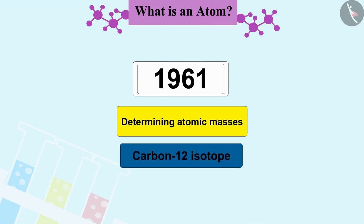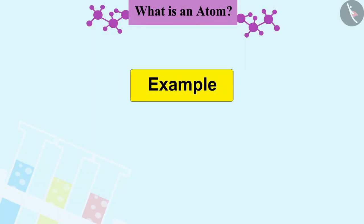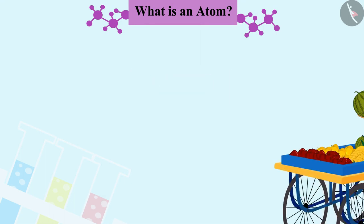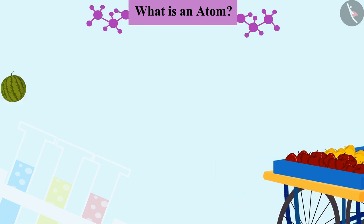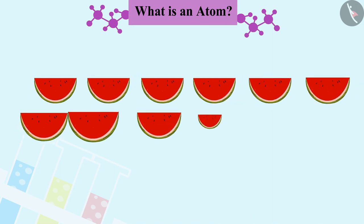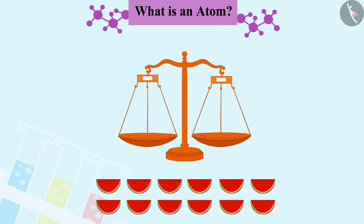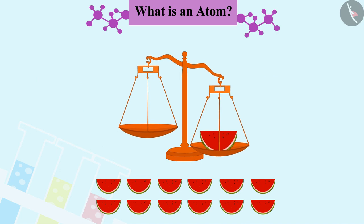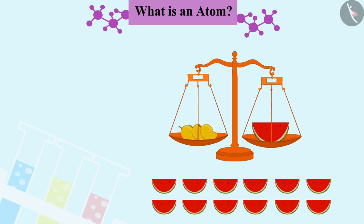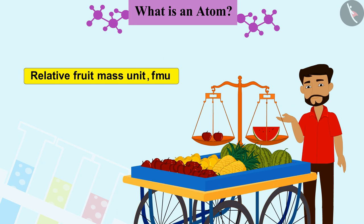Let us understand this by a daily life example. Imagine a salesman carrying a watermelon and saying its mass is 12 units. He then slices 12 equal pieces of watermelons and finds that the mass of each fruit it sells is relative to a piece of watermelon. Now he sells fruits by relative fruit mass unit, FMU.